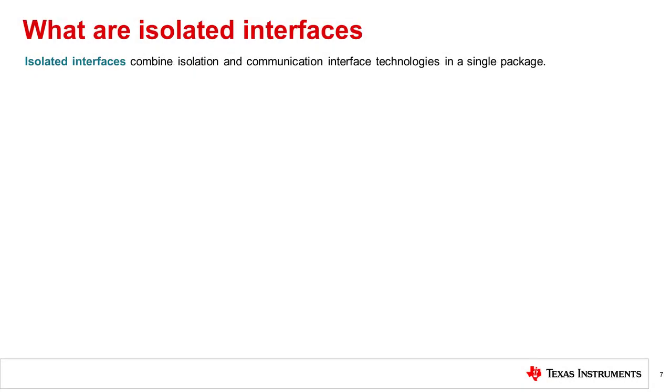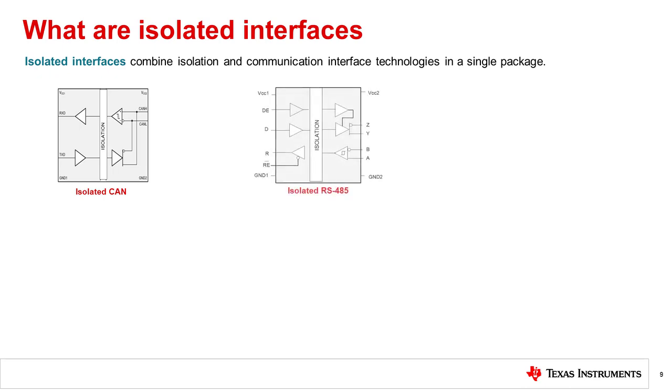What are isolated interfaces? Isolated interfaces are the integrated combination of isolation technology with a communication interface. There are many integrated isolated interfaces available, but this video will focus on the use case of CAN, RS-485, and I2C as primary examples with general considerations for isolating a communications interface.